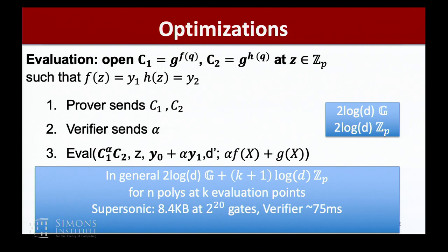Another optimization: if I want to evaluate two polynomials at the same point, I take a random linear combination between the commitments and evaluate that. In general, if I have N polynomials to evaluate at K evaluation points, the proof size grows only in K with a very small constant — only one additional field element per additional evaluation point. In Supersonic, using Plonk, we get proof sizes of about 8.4 kilobytes for a million gates and estimated verification time of around 75 milliseconds.